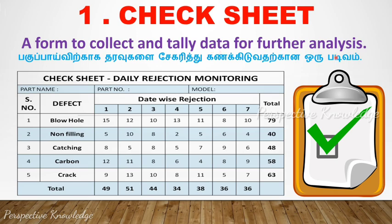The Cause and Effect Diagram is also known as the Fish Bone Diagram. The first tool is the Check Sheet or Checklist.